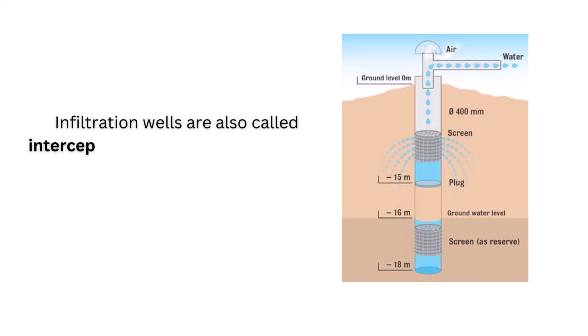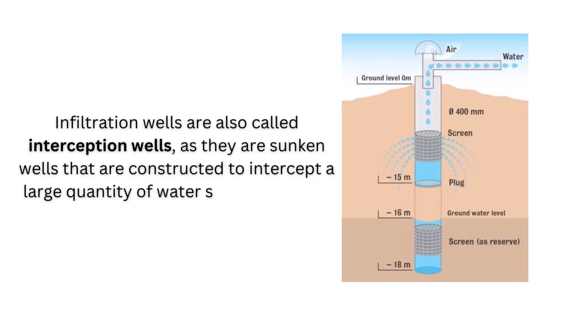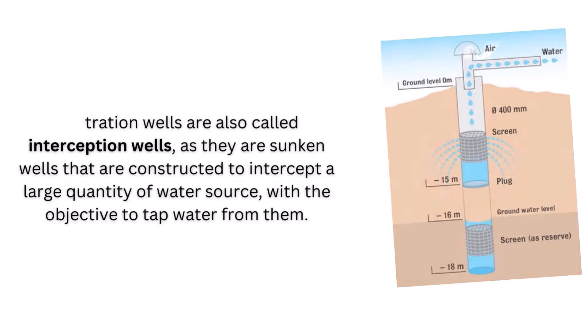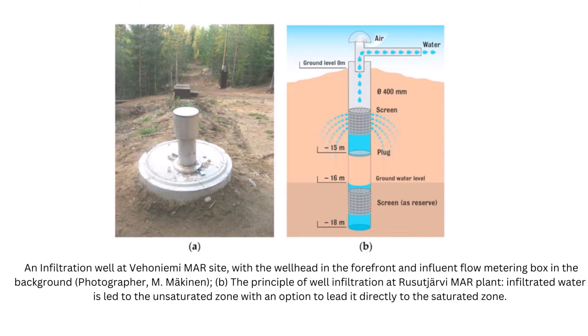Infiltration wells are also called interception wells, as they are sunken wells constructed to intercept a large quantity of water source. In this case, it is an aquifer with the objective to tap water from them to meet the requirement of water supply.